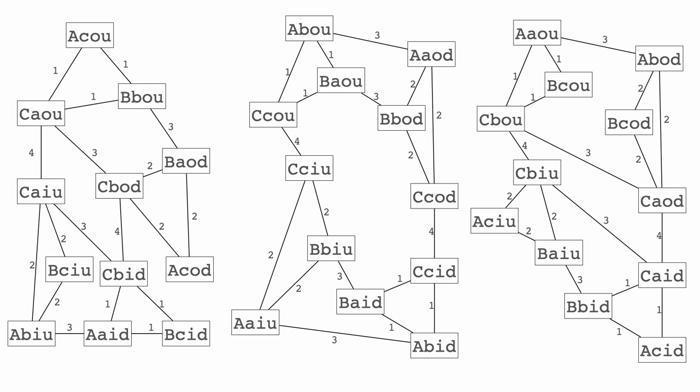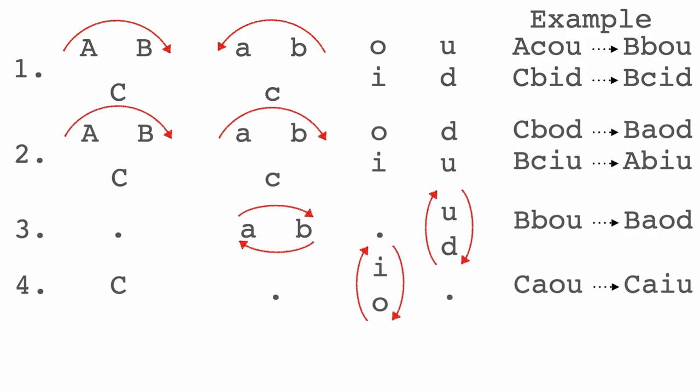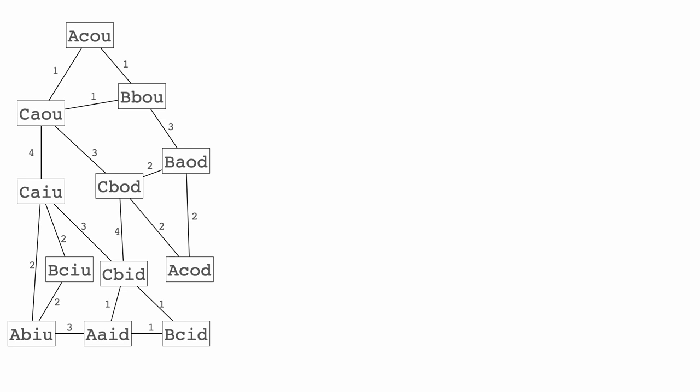We need to find a way to get to that position. We have a fifth move that we need to find. At this point I was of course a bit disappointed. But then I realized I could actually search for this fifth move thanks to the graph that I had already generated.